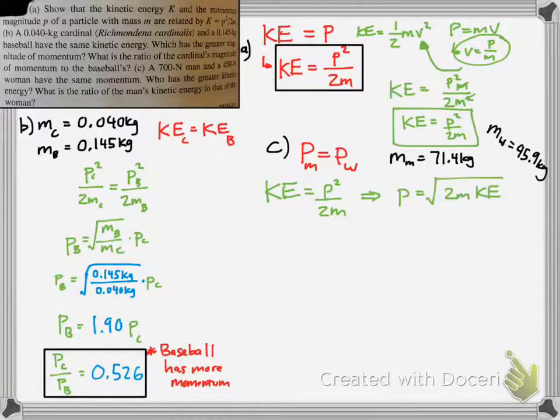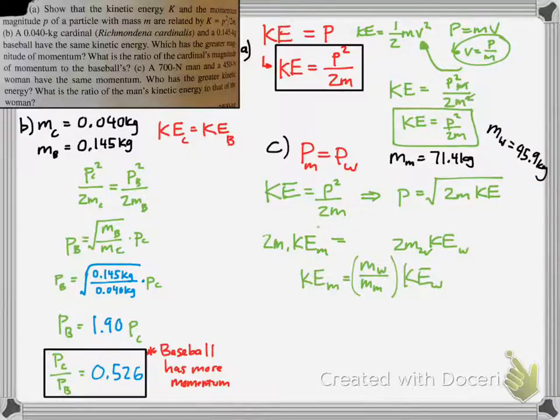Solving for p, you get p = √(2m·KE). What you do is you set the two momentums equal to each other. Notice how they would both be under the square root. I already squared both sides to get rid of the square root. Now we're going to have to solve for the ratio. So solve for KEm = KEw.